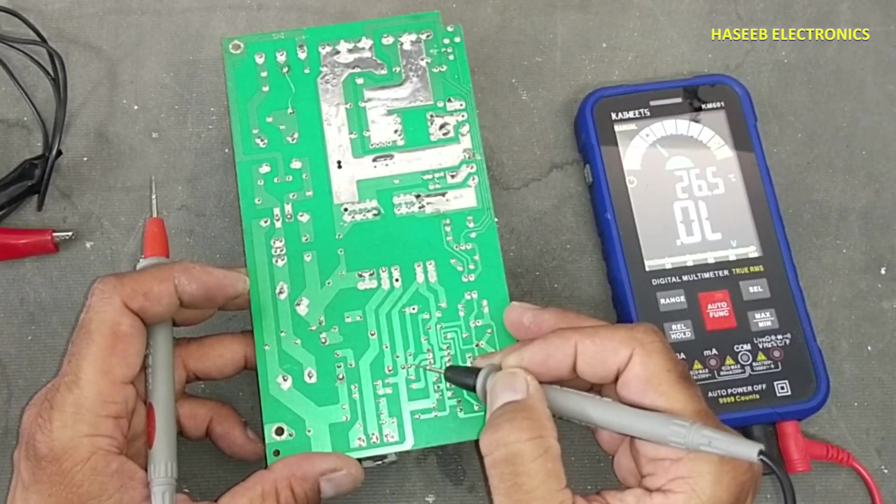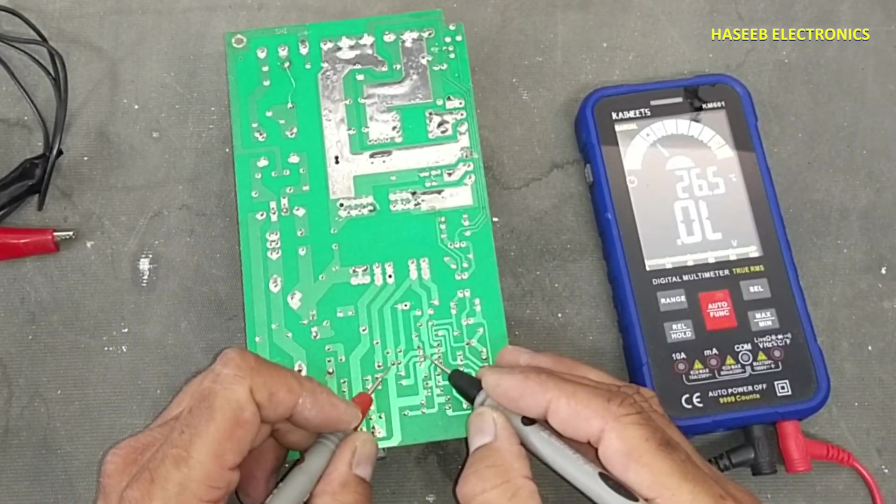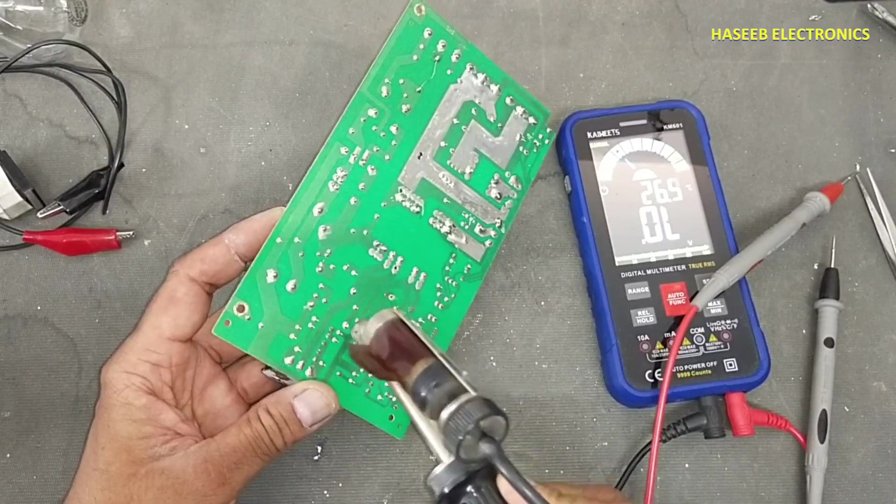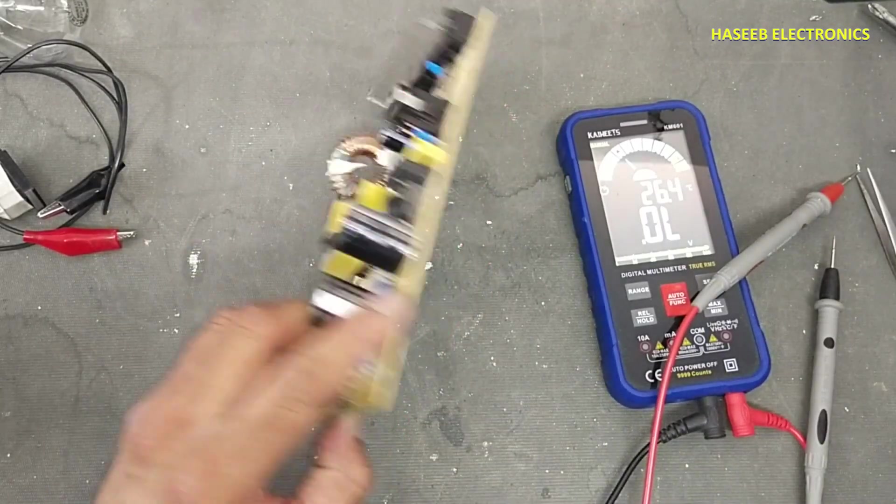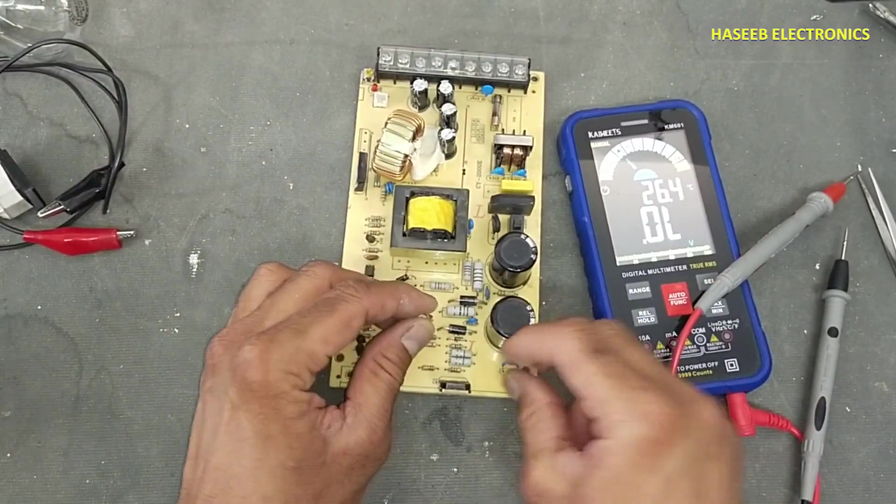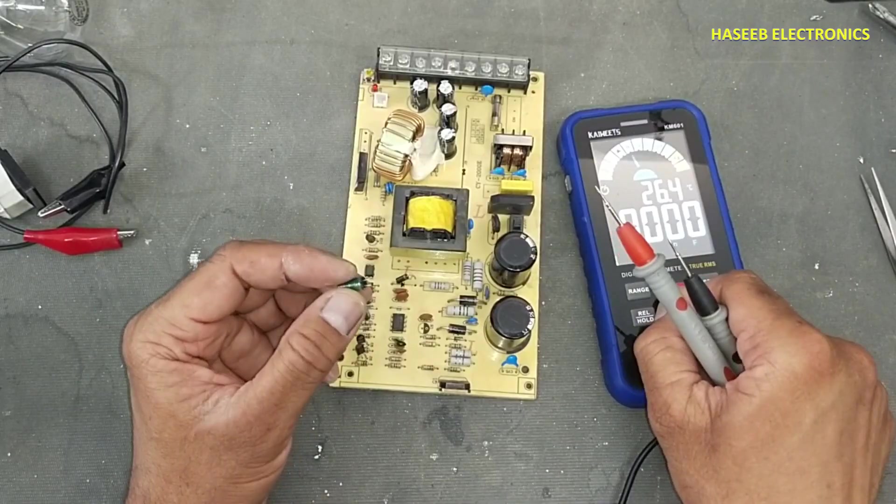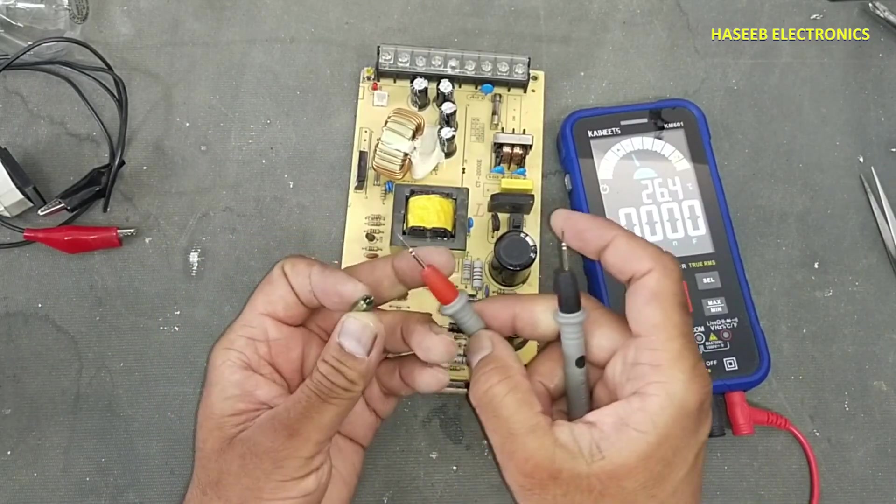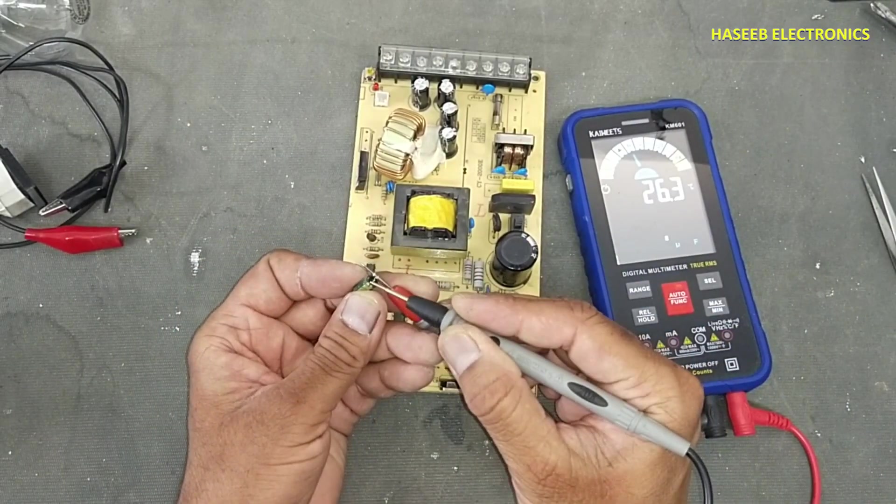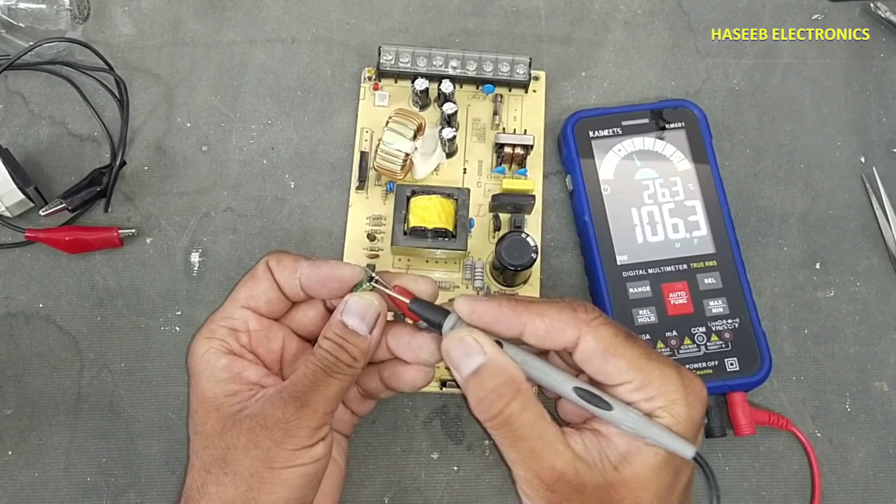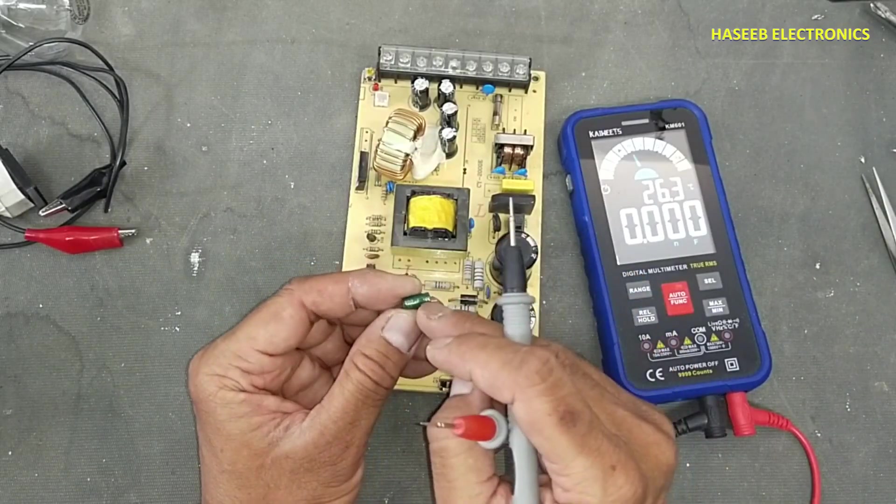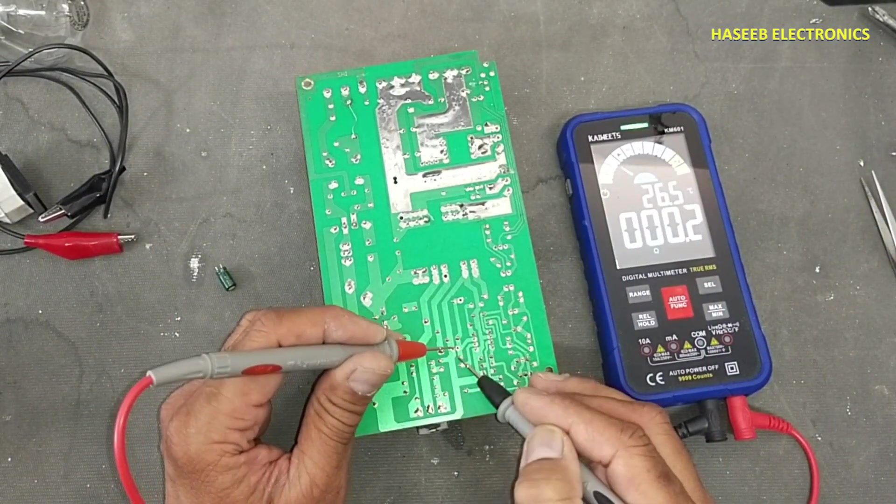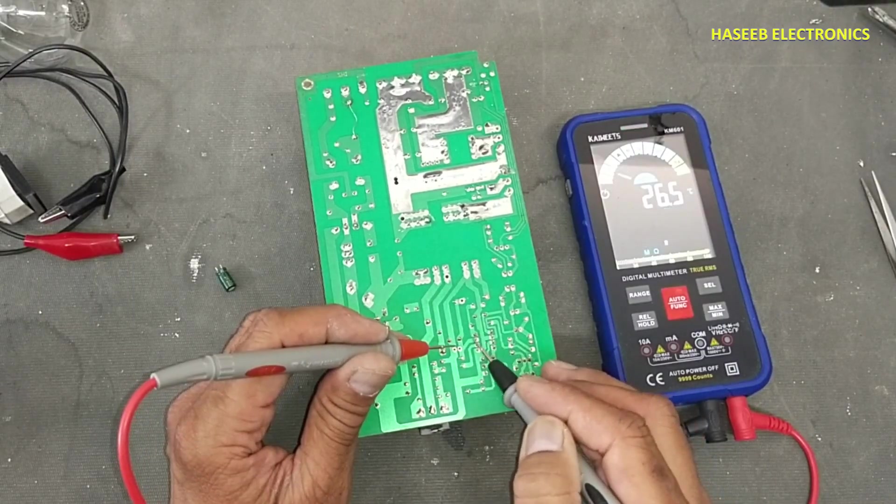So here we have two items. First I will remove this capacitor and discharge it. In capacitor smart check, capacitors 106 microfarad. It is 100 microfarad. This capacitor is good. We will check short circuit here. Still we have short circuit. That means this IC is damaged.